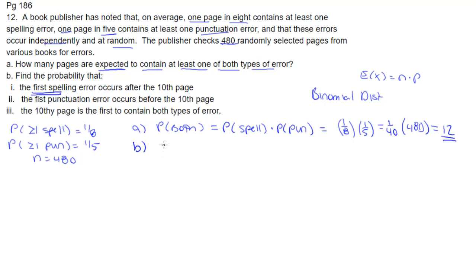Now, part B, number one, first error occurs on the 10th page. This is a switch. Now we're talking about a geometric distribution. The probability is 1/8 because it's a spelling error.